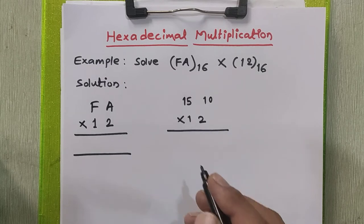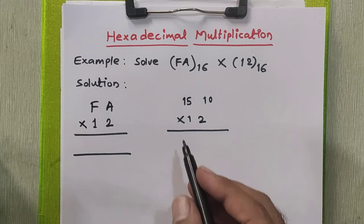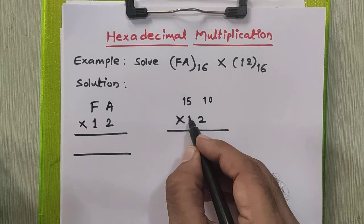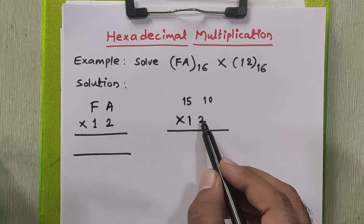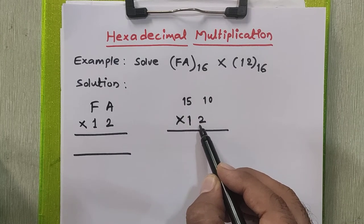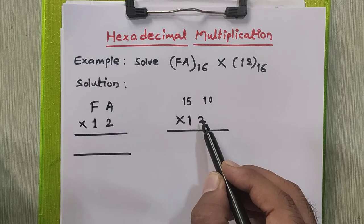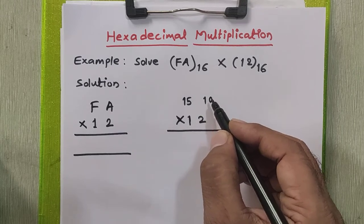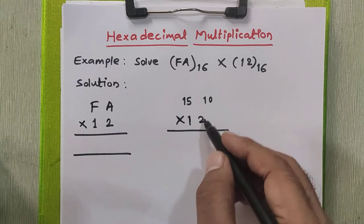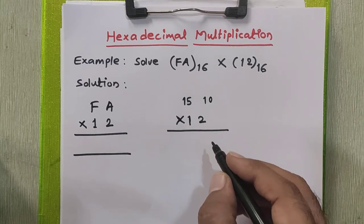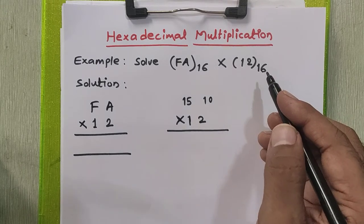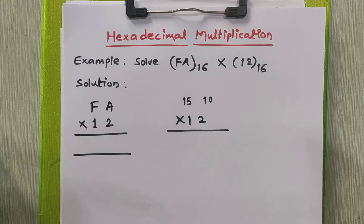We're going to use the same rule of multiplication the way we multiply two numbers in decimal number system. We're going to multiply all these digits by the first digit of the second number, that is 2 in this case. So I'll first multiply 2 by 10. 2 by 10 is 20, but I will not write 20 here as it is. We have to convert 20 into hexadecimal number system. What is the hexadecimal equivalent of 20?